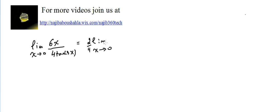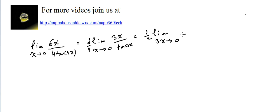And the 4 outside. What remains inside is 2 times 3x over tangent(3x), which divided by 4 is one-half times the limit as 3x approaches 0 — if x approaches 0 then 3x approaches 0 — of 3x over tangent(3x). We know that the limit of tangent(u) over u as u approaches 0 is equal to 1, and this is the reciprocal of it, so it's also equal to 1.